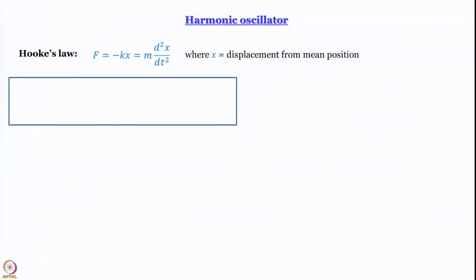Why should we discuss the harmonic oscillator in a quantum chemistry course? The biggest reason from a chemist's perspective is that a harmonic oscillator provides an approximate model for a vibrating diatomic molecule. The force constant k tells us how strong a spring is. We approximate the chemical bond between 2 atoms in a diatomic molecule as a spring with spring constant k, so k automatically becomes bond strength. If we can determine k quantum mechanically or spectroscopically, we get the bond strength — one of the most fundamentally important parameters in chemistry.